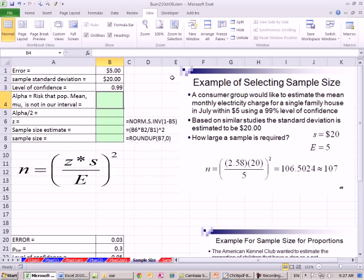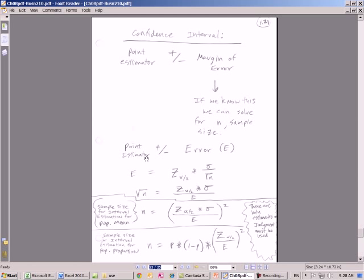In this video, we want to estimate sample size. Now let's go over to our PDFs. Here's the general form of our confidence interval that we've been using: some point estimator plus or minus a margin of error.